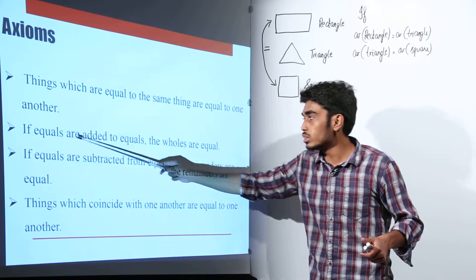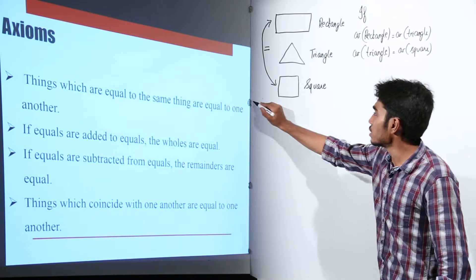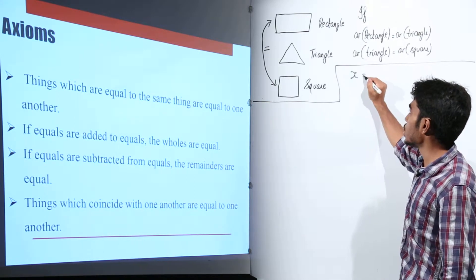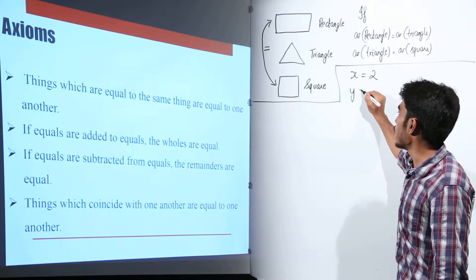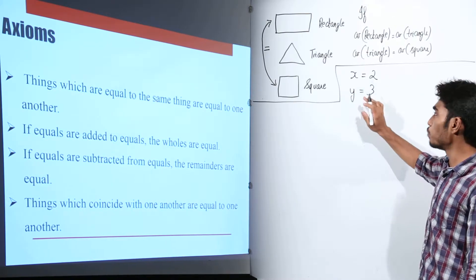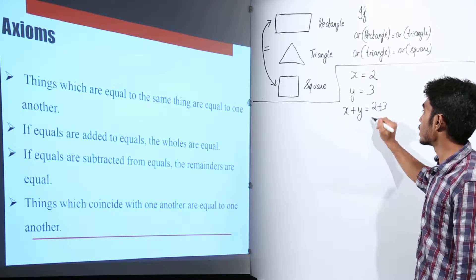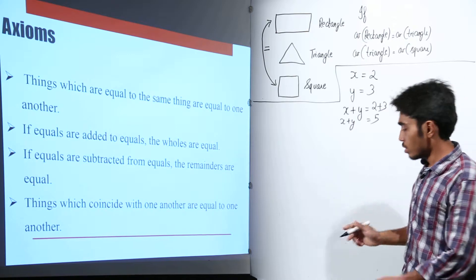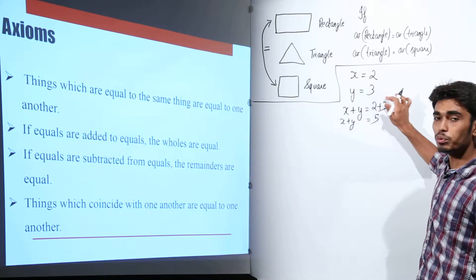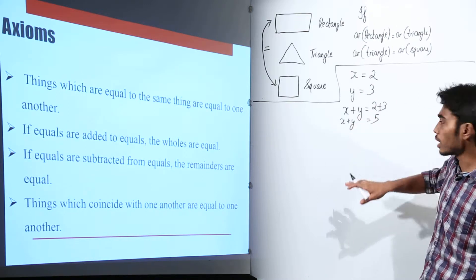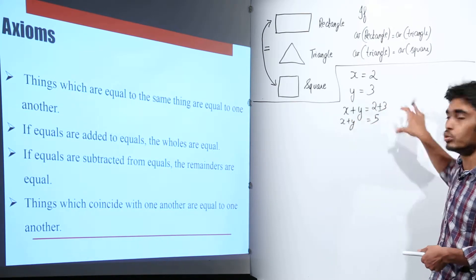The next axiom says: if equals are added to equals, the wholes are equal. For example, if x equals 2 and y equals 3, then x plus y equals 2 plus 3, which equals 5. So the whole, x plus y, is equal to the whole, 2 plus 3, which is 5.